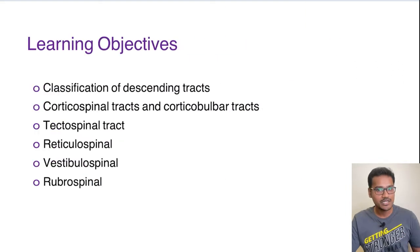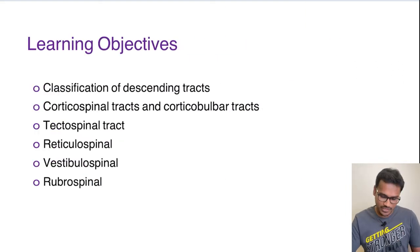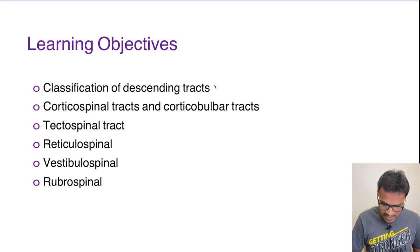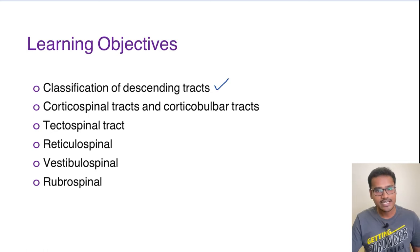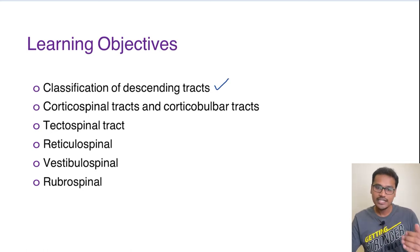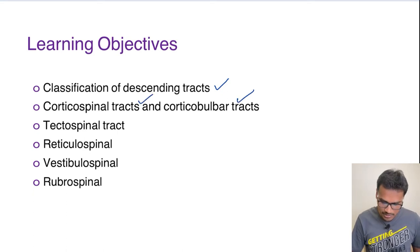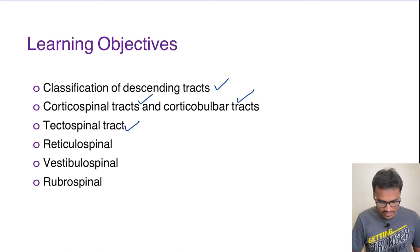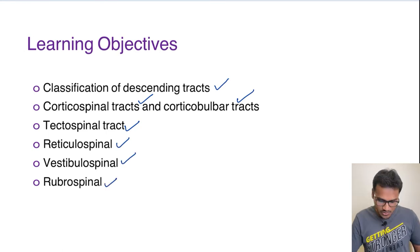Coming to the learning objectives of today: we are going to learn about the classification of descending tracts, with some modifications. Then we will cover corticospinal tracts, corticobulbar tracts, tectospinal tract, reticulospinal tract, vestibulospinal tract, and rubrospinal tract. So let us dive into the topic.